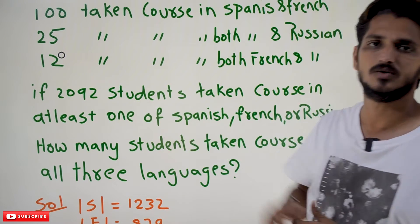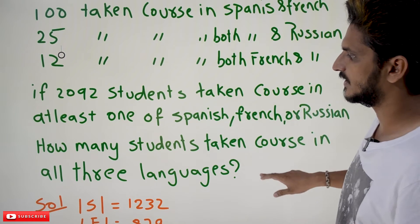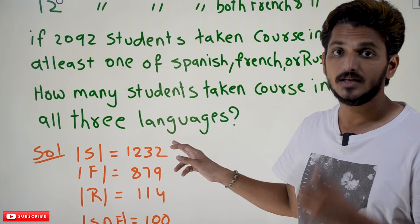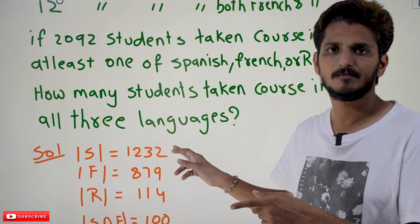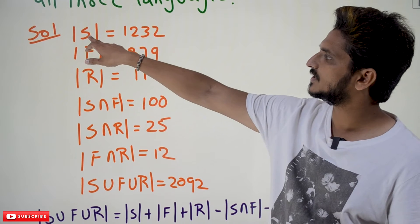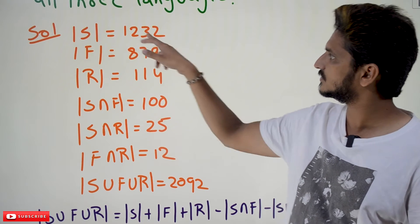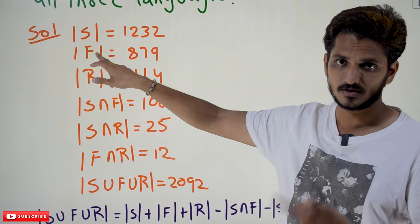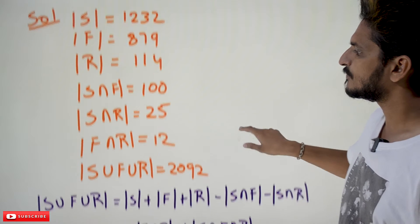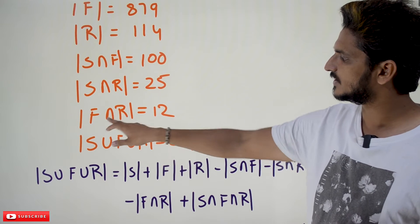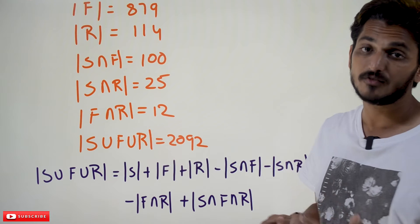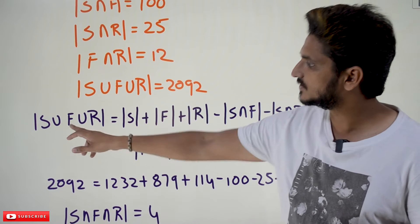They are asking how many students have taken courses in all three languages, i.e., we need to find A intersection B intersection C. To summarize the given values: students who took Spanish = 1232, French = 879, Russian = 114; Spanish intersection French = 100, Spanish intersection Russian = 25, French intersection Russian = 12, and Spanish union French union Russian = 2092.